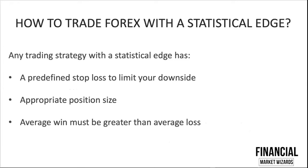Any trading strategy with a statistical edge has minimally three things. Number one: it has a predefined stop loss to limit your downside. All trading strategies need to have a stop loss because it's impossible to get it right 100% of the time. If you don't have a stop loss, one trade is going to blow your account — a trade that trends against you has the potential to wipe out your account. So always have a stop loss, and put it in the moment you enter your order. It's fine if you do not put in take profit levels, but always put in a stop loss.